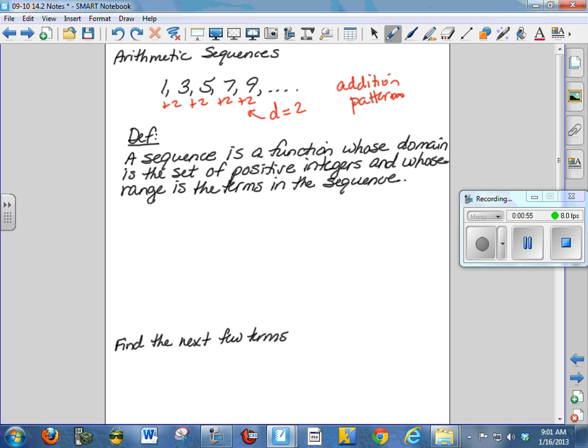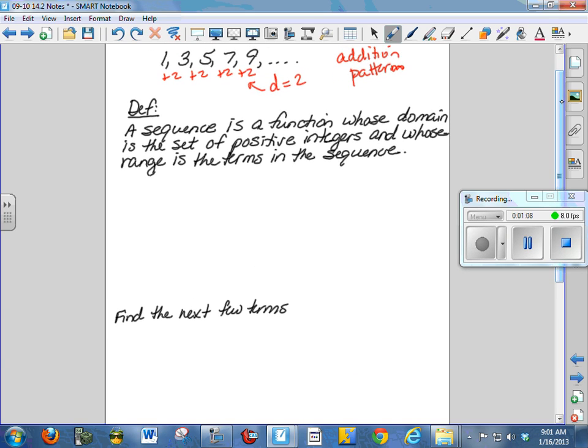Now, recall the definition of a sequence. A sequence is a function whose domain is the set of positive integers and whose range is the terms in the sequence. So let's set up a little chart here. We'll call our term number n and our term a sub n. And we know that a sub 1 is 1, a sub 2 is 3, a sub 3 is 5, a sub 4 is 7, and a sub 5 is 9.